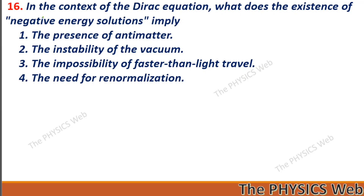Next, question sixteen: in the context of the Dirac equation, what does the existence of negative energy solutions imply? It implies the presence of antimatter. So, one is your correct option.